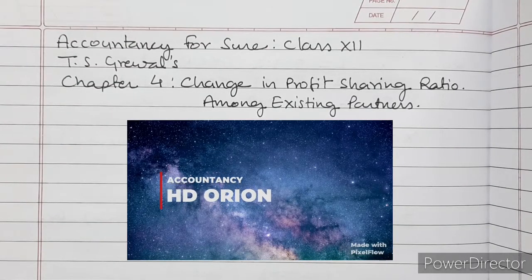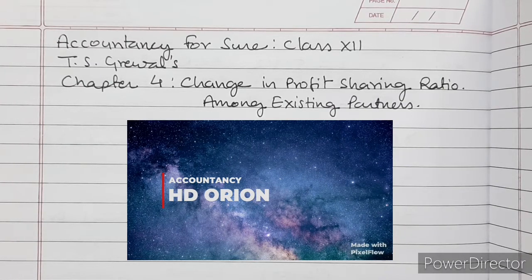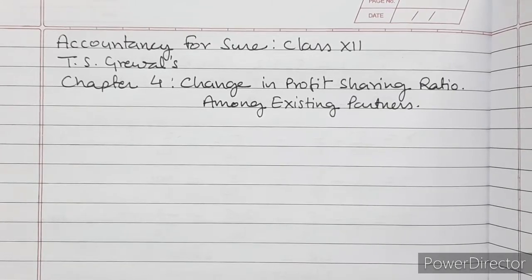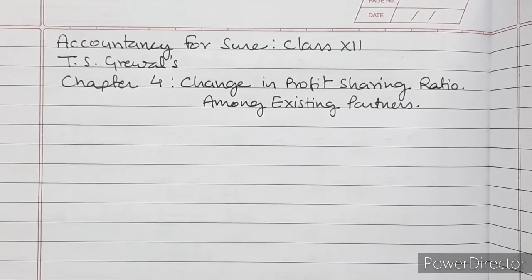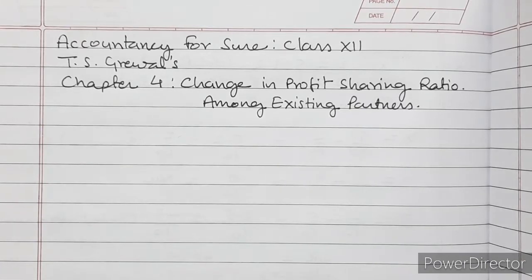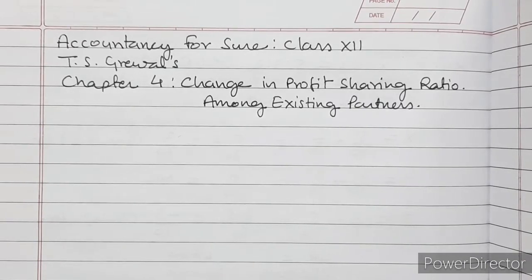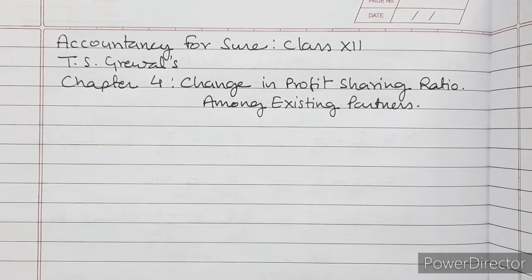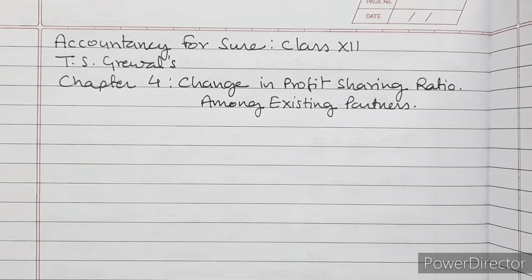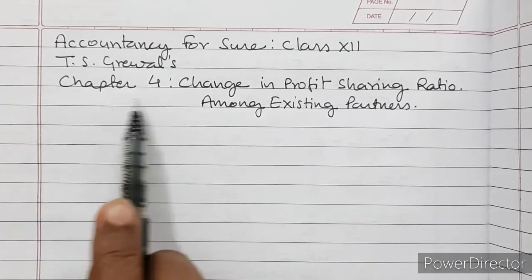Hello everyone, welcome to my channel. We are studying accounting for partnership firms for Class 12, and the book is TS Grewal. Today we will be discussing revaluation of assets and reassessment of liabilities. For this we will prepare the revaluation account, which is also known as the profit and loss adjustment account.